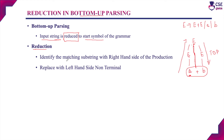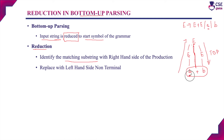In every step of bottom-up parsing, it will identify a matching substring. For example, if we are considering the substring 'a', it will match the production E derives a. So we have identified a matching substring in the right-hand side of the production, and in the next step we will replace this matching substring with the left-hand side variable.